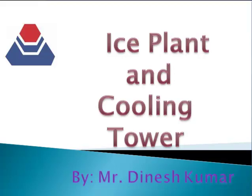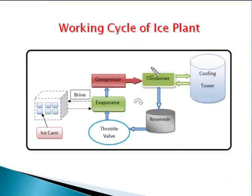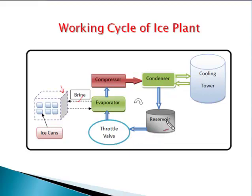Hello dear students, today's topic is ice plant and cooling tower. This is the working cycle of an ice plant. The basic components of an ice plant are: the ice can, chilling tank, brine solution as the secondary refrigerant, evaporator, compressor, condenser, reservoir, throttle valve, and cooling tower. These are the basic components used in the production of ice.